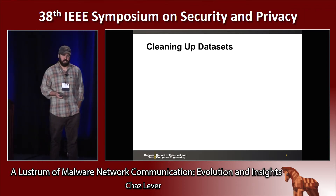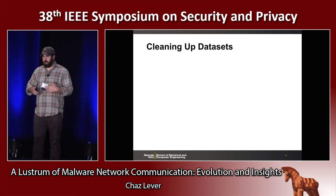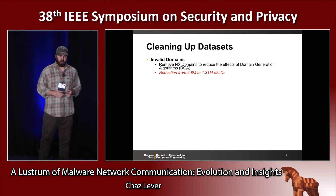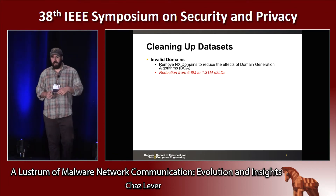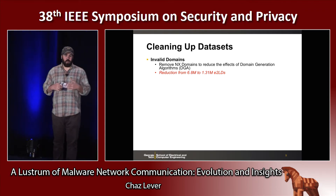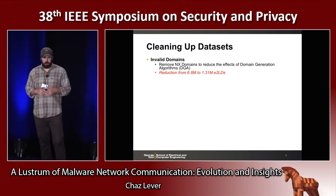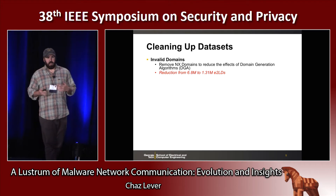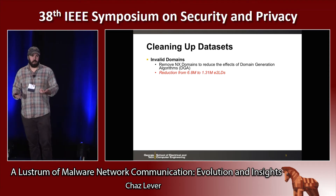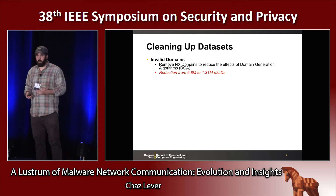One of the challenges with dealing with this much data is actually filtering out a lot of the noise. We spent a considerable amount of time figuring out how to clean up these data sets reliably. One thing we did was remove NX domains — non-existent domains queried by malware in dynamic analysis environments — to reduce the effects of domain generation algorithms. This reduced 6.8 million domains down to about 1.31 million effective second-level domains.